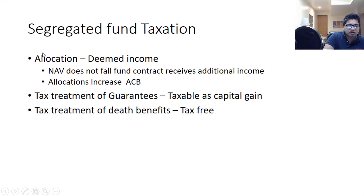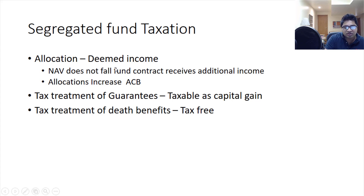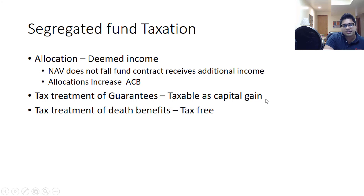There are no actual units distributed when you buy segregated funds — they are deemed units. Whatever allocations you get — dividend, capital gain, or interest — are deemed income, called deemed allocation. Unlike mutual funds and ETFs where NAV falls when distributions are made, in segregated funds the NAV does not fall. The fund contract receives additional income, and allocations like dividends, capital gains, or interest generally increase the adjusted cost basis of the fund.